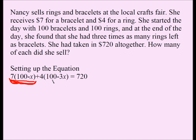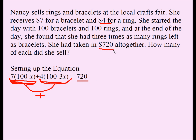We also know that she sold 100 minus 3X rings and each ring is $4. So she received 4 times (100 minus 3X), the total amount of money she received by selling the rings. If you add them up, that should equal the total amount of money she received, which according to the question is $720. So that's the equation.